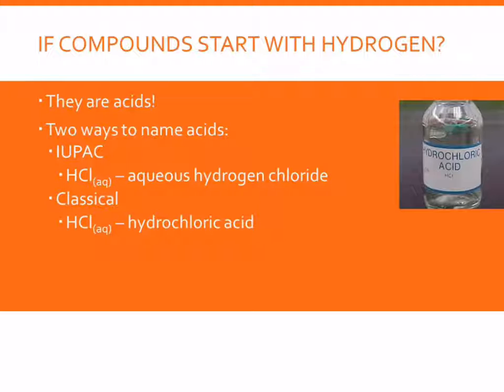And there are two ways to name acids using the IUPAC naming which you see first. So if we had HCl we could name it aqueous hydrogen chloride. Acids are always going to have that AQ because they're always mixed with water. The classical naming method uses some other rules so HCl would be hydrochloric acid. This is how you would normally find HCl in a prep lab.